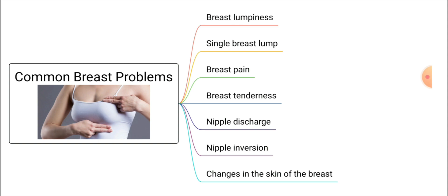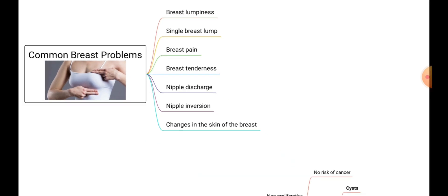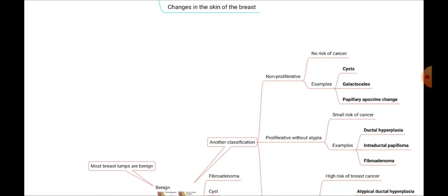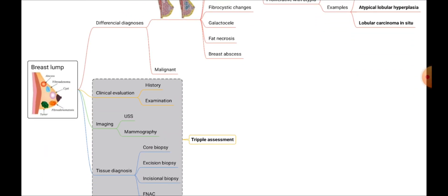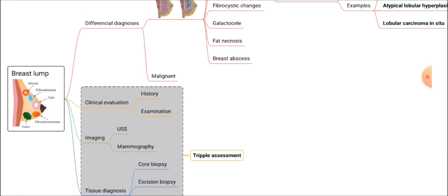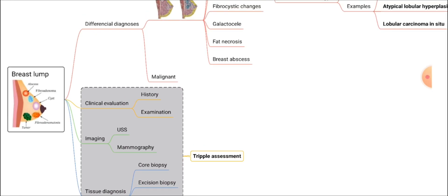Nipple inversion can be there, or there can be skin changes of the breast. These are the common breast problems and we should have an idea about all of them. Let's go through one by one. Here I thought of focusing first on breast lump, and in future videos we will discuss about other breast disorders as well.